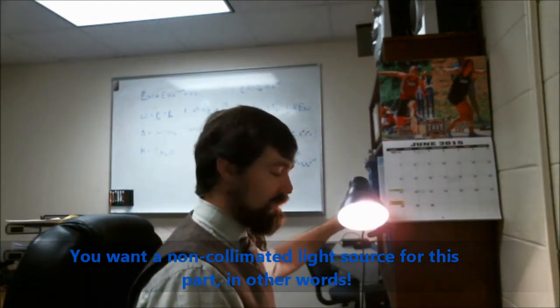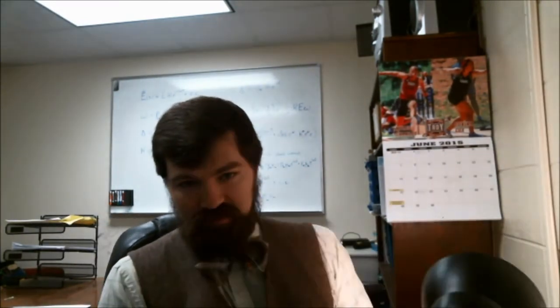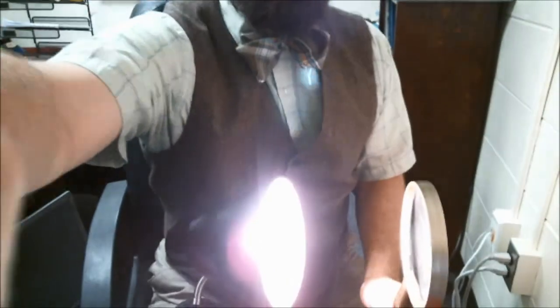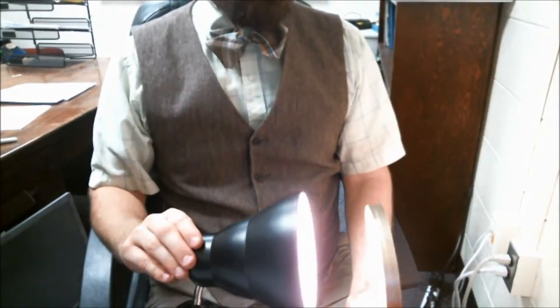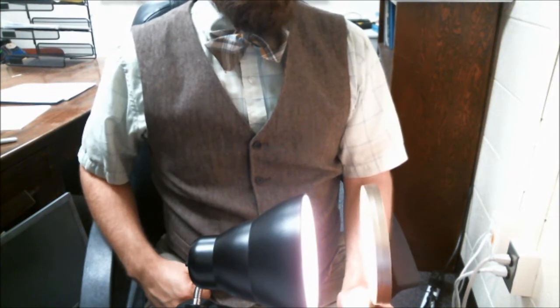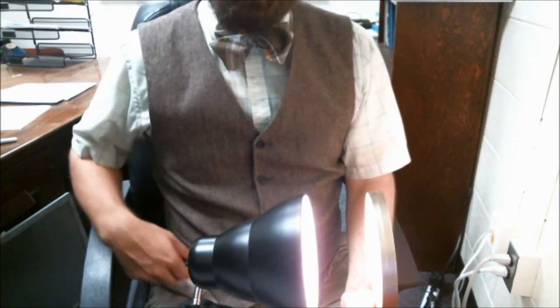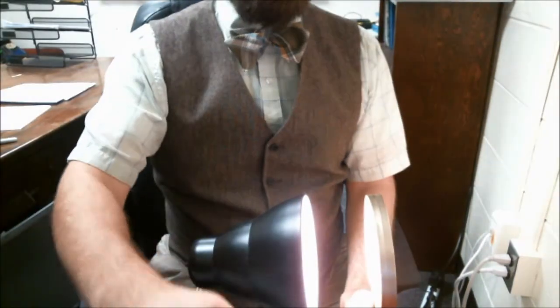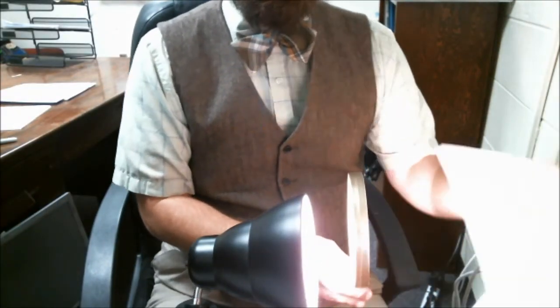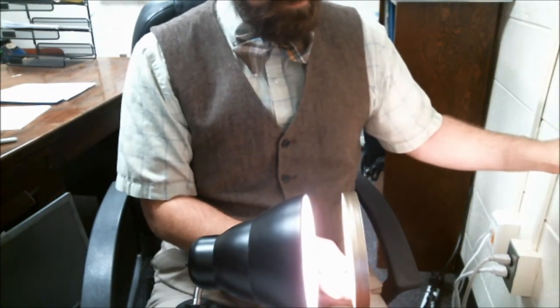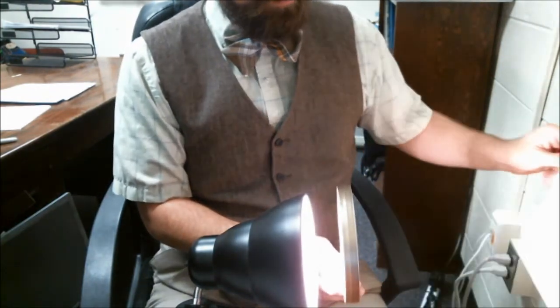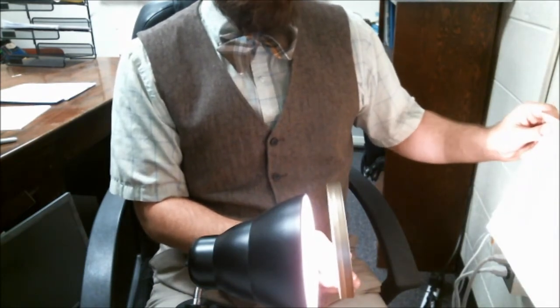So what that is going to look like is you want to mount the lamp or candle somewhere. And you pick some location. Pick some location for your lens to be held. And then you take your little imaging screen and you move it until you get the clearest, sharpest image of your source on that screen.